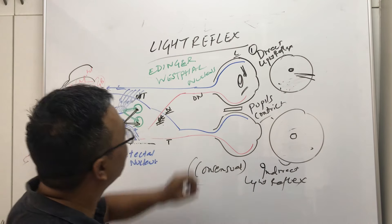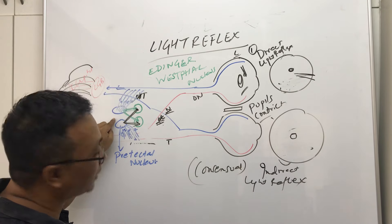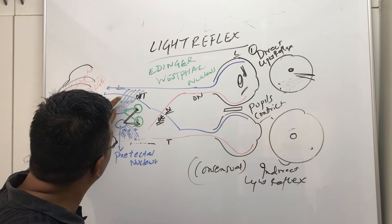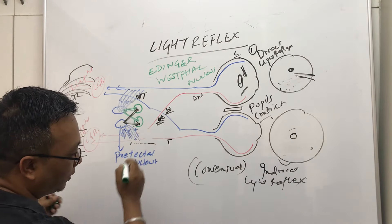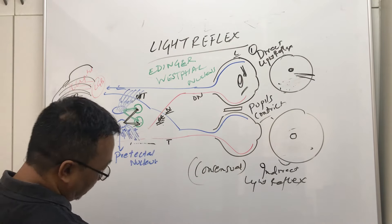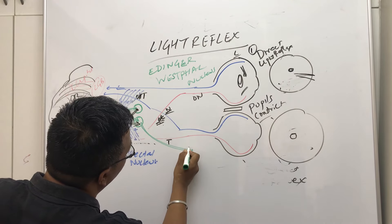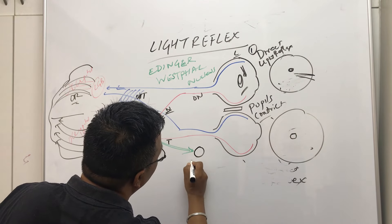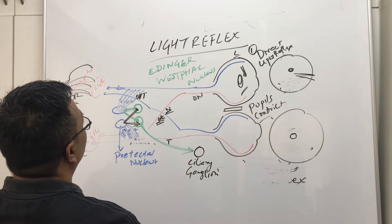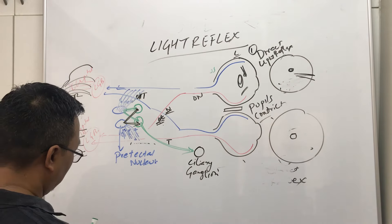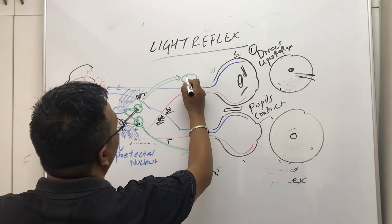When writing the light reflex pathway: optic nerve fibers → optic chiasma → optic tract → pretectal nucleus — you stop here and make a turn — then Edinger-Westphal nucleus, and from there to the ciliary ganglion.